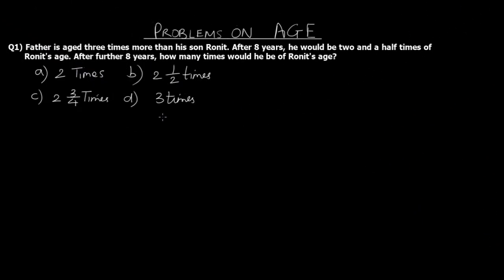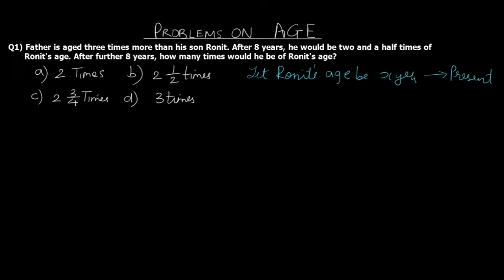Let's move on to the actual numericals. Question 1: Father is aged three times more than his son Ronit, and after eight years he would be two and a half times of Ronit's age. After a further eight years, how many times would he be of Ronit's age? Let's assess the first line. We know the father is three times more than Ronit's age, so let Ronit's age be x years in present time. Father's age is three times more than his son's age x.